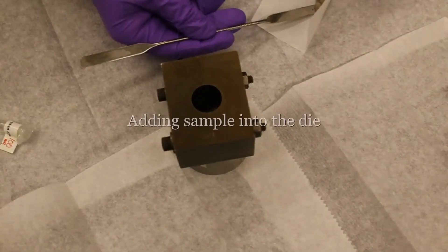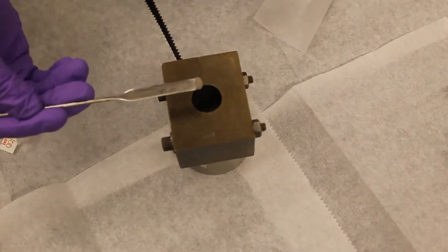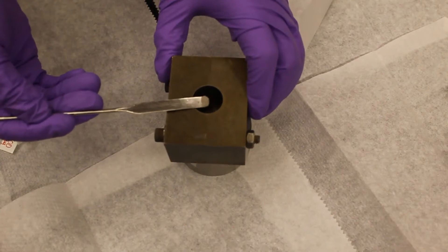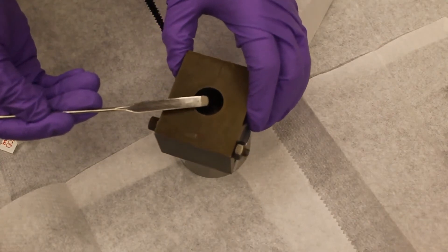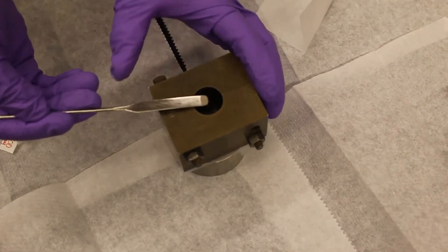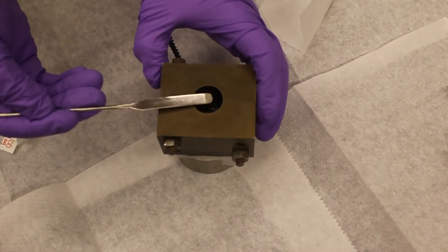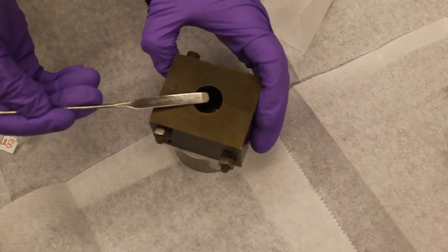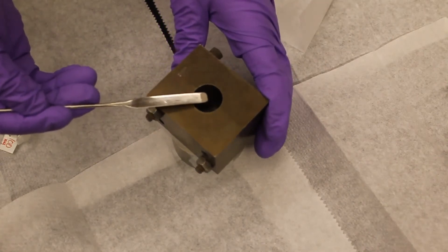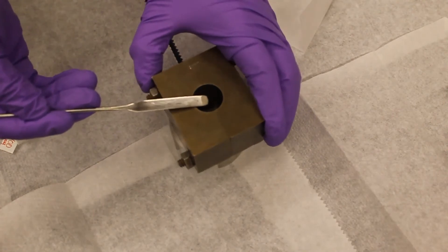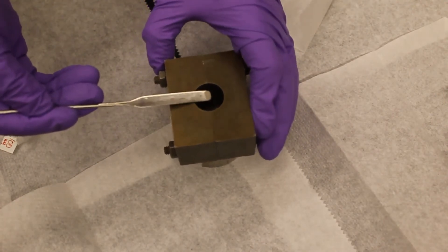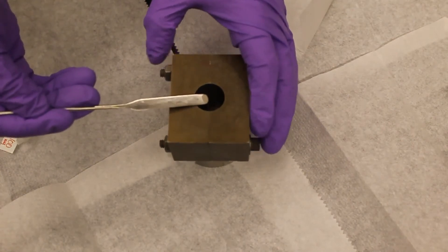Now we're going to put the sample in the die. We do that by slowly pouring the catalyst into the die. It is extremely important that the powder is uniformly spread over the mecha surface, because once this step is completed it is difficult to change the uniformity of the sample. Uniform spreading can be achieved by spinning the die while gradually adding sample.